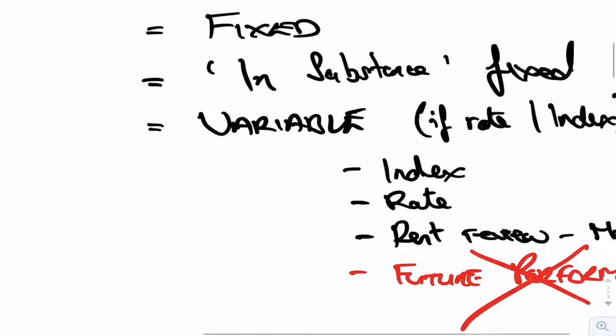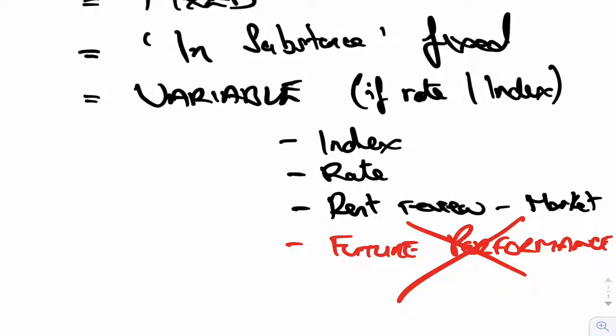Those lease payments could be fixed. If they are, you include them. In substance fixed, when they're unavoidable, you include them. Or if they're variable and they're based on a rate or index, you include them.